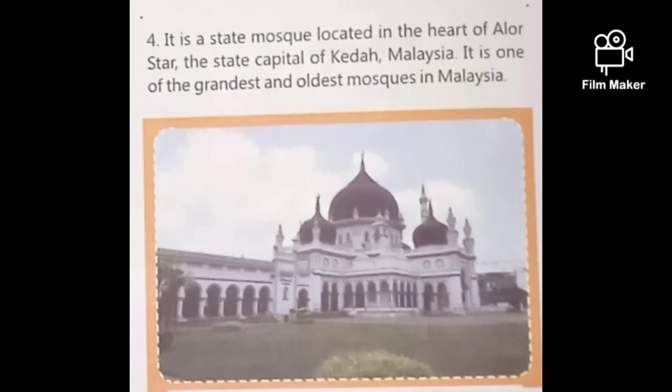Number four: it is a state mosque located in the heart of Alor Star, the state capital of Kedah, Malaysia. It is one of the grandest and oldest mosques in Malaysia. Its name is Zahir Mosque. Spelling: Z-A-H-I-R M-O-S-Q-U-E. It is the oldest mosque in Malaysia and is located in the capital of Kedah, Malaysia.